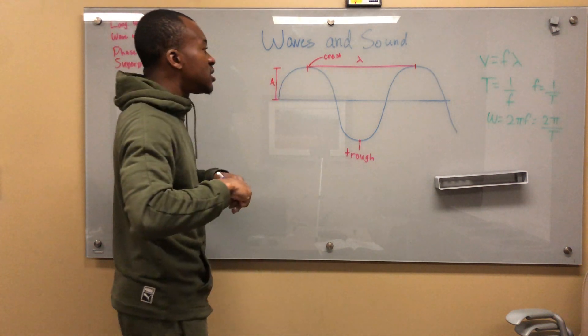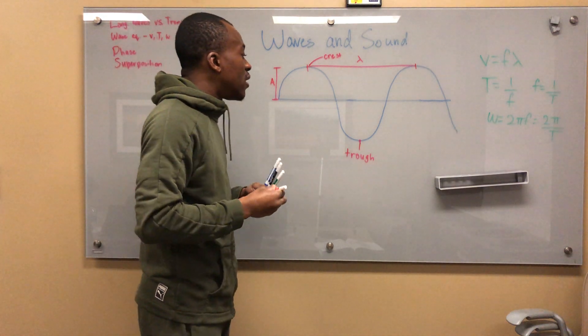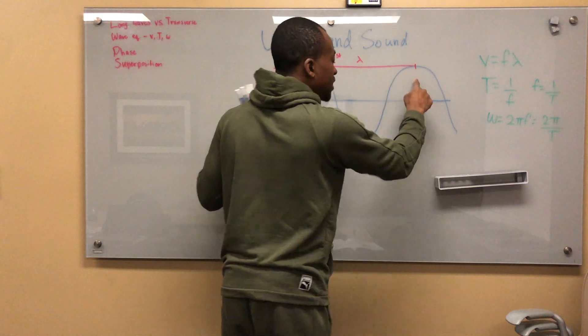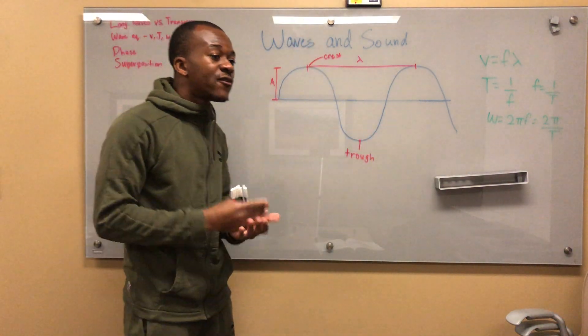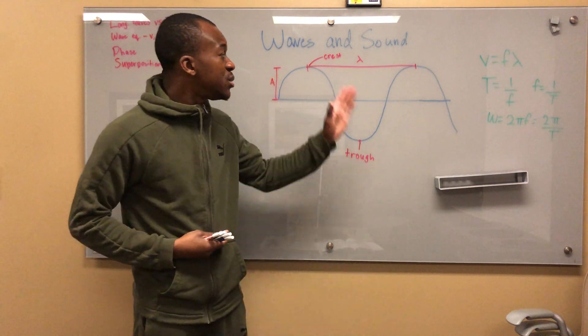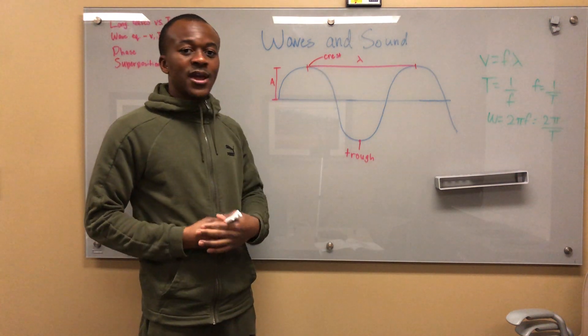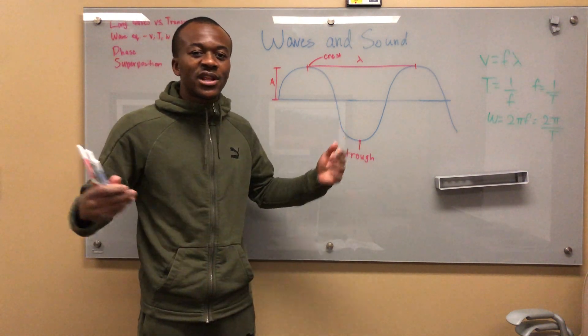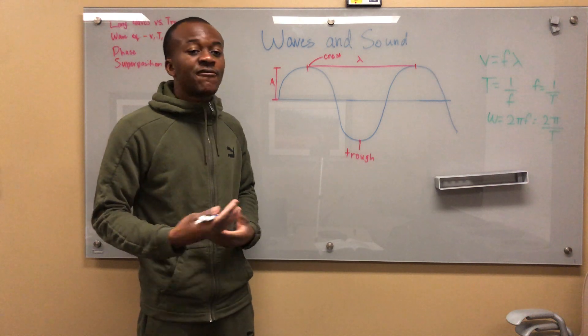These are things that you need to know. The period is how long it takes the wave to go from here to here, for example. The frequency is sort of intuitive - it's how often that happens. When we divide one by that, that's what we get.